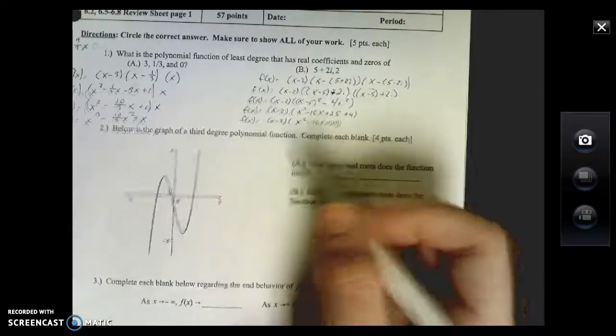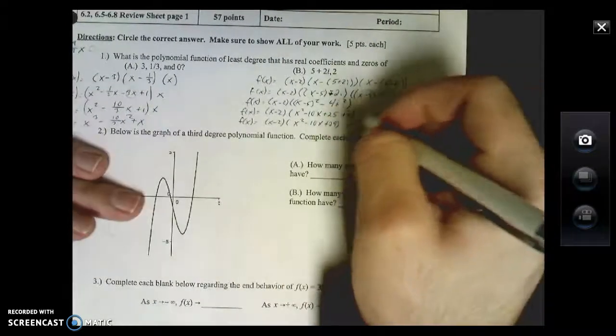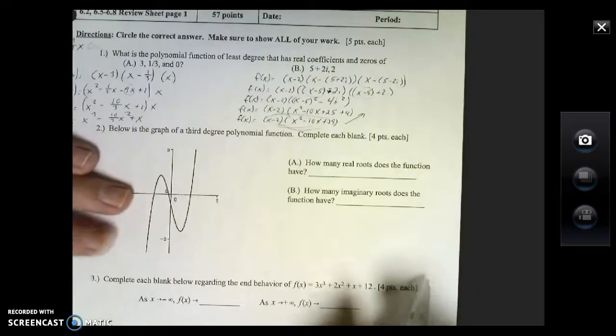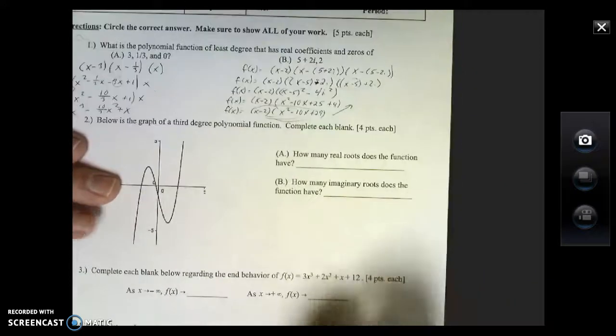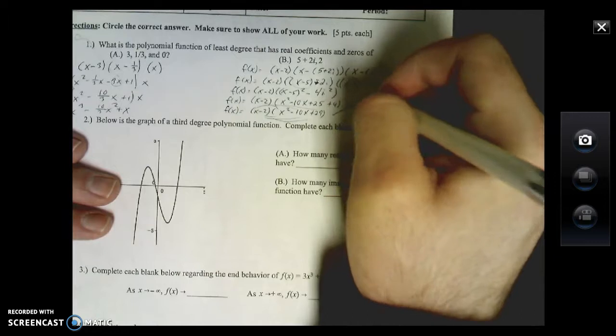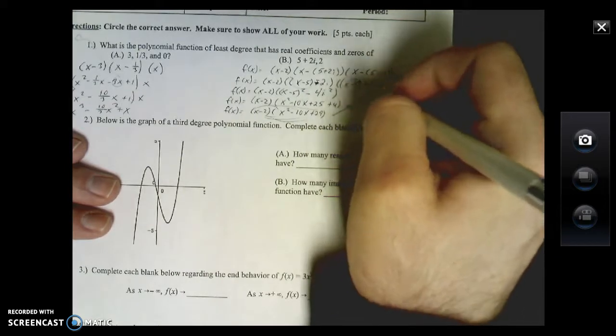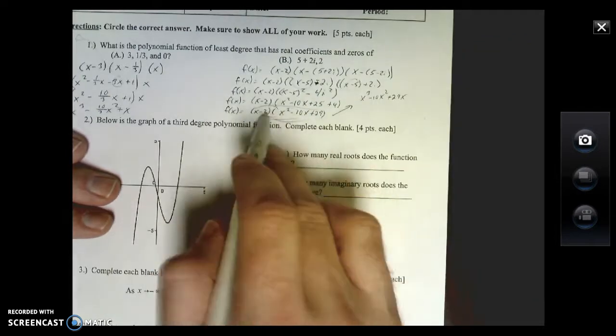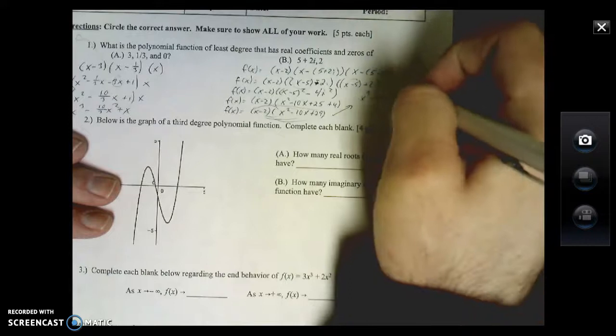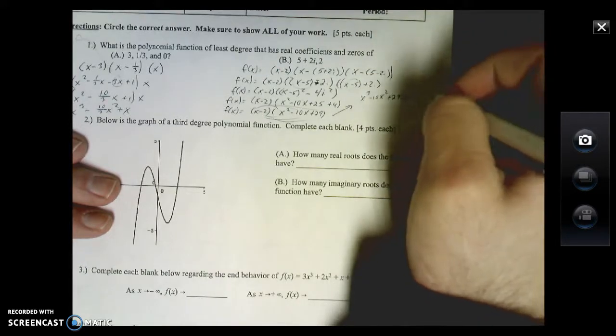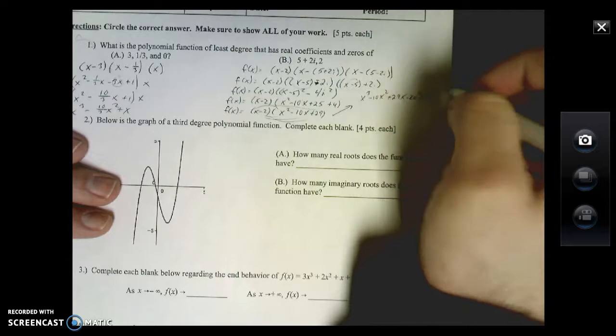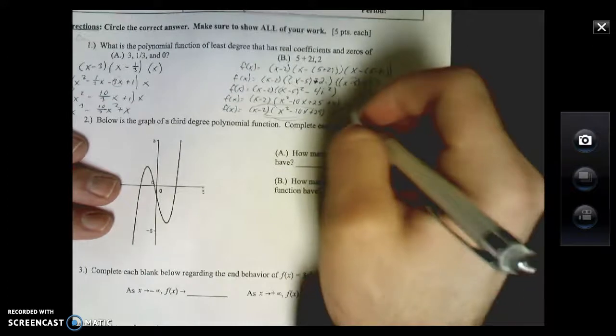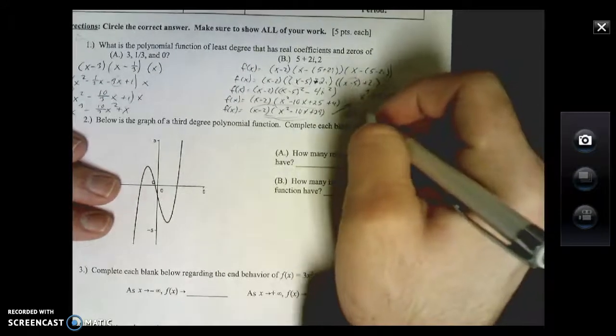Now we're just going to distribute the X minus 2 across. This is just multiplying across. X times X squared is X cubed minus 10X squared plus 29X. All I do is multiply the X all the way across, now I'm going to multiply the negative 2 all the way across: minus 2X squared, minus 20X, and then minus 58.